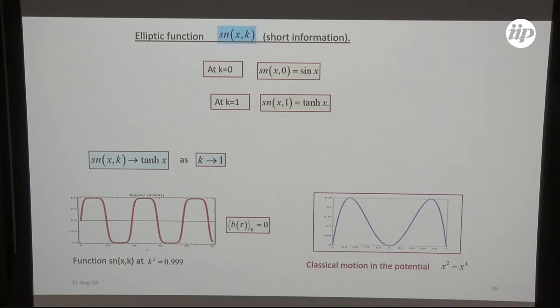This is exact solution. It is hyperbolic tangent. When k goes to one, if k goes to zero, it is just sine. This is just these trivial oscillations. If one has k squared, for example 0.99, then this function is like this chain of instanton, anti-instanton. This is instanton, hyperbolic tangent x. And one has this chain.